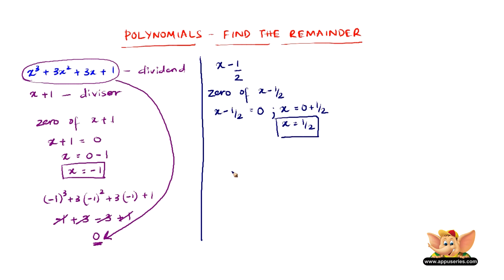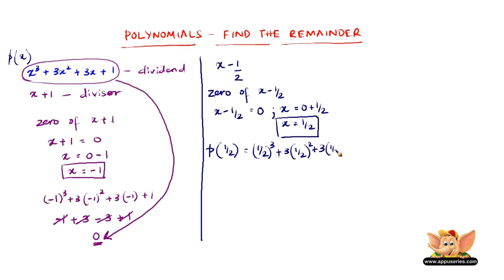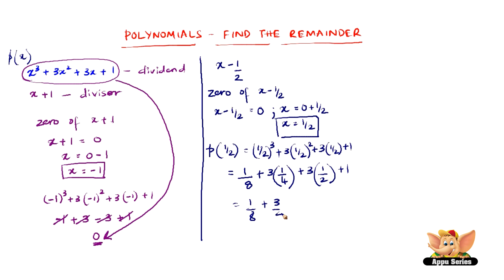So we found the value of x. Now, all we have to do is substitute the value of x in the expression x cube plus 3x squared plus 3x plus 1. So let us take this as p of x. Then we have p of 1 by 2 equals 1 by 2 whole cube plus 3 into 1 by 2 whole square plus 3 into 1 by 2 plus 1, which gives us 1 by 8 plus 3 by 4 plus 3 by 2 plus 1.